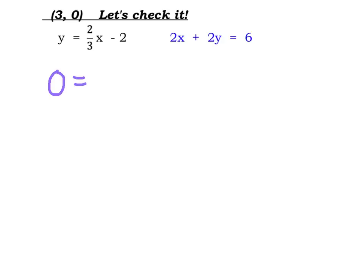Y is 0, is equal to 2 thirds times x. My x value is 3, but since I'm multiplying it by 2 thirds, I'm going to write that as times 3 over 1 minus 2. When I'm multiplying my fractions, I like to cross cancel, and since this fraction has a denominator of 3 here and a numerator of 3 here, those both can be divided by 3. And when I multiply, I will get 0 is equal to 2 minus 2, 0 is equal to 0, and that equation checks out.